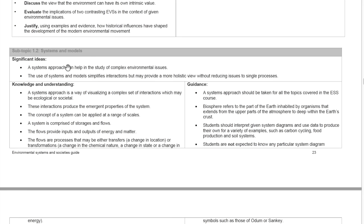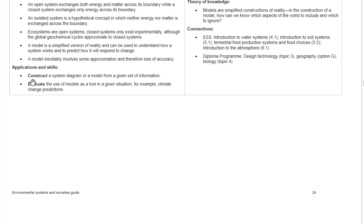Here in section 1, subtopic 1.2 of the ESS guide, we see a very important and central application: to construct a system diagram or a model from a given set of information. Throughout the course, as shown in previous lessons, it is imperative that you construct good systems diagrams to show the interaction between different components of the environment — the biotic and the abiotic components — and to show how the human environment interacts with the natural environment and how the natural environment impacts society. Thank you.